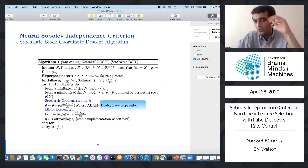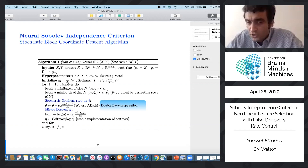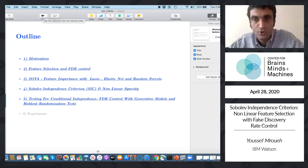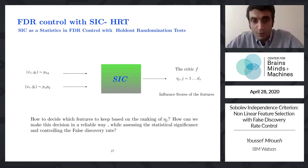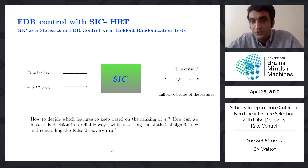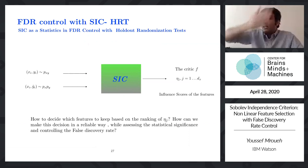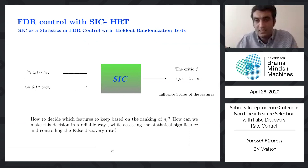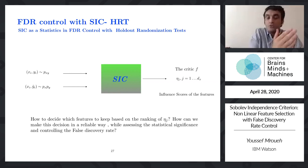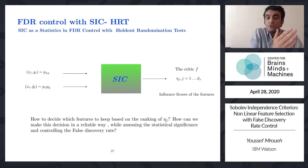Now I'll move to the second part: using those feature importance scores to control the false discovery rate. So far, we have a method that gives feature importance scores for nonlinear relationships. We could rank the eta_j's and keep the top 50 or 60 features, but setting this threshold is arbitrary. We need a principled way to determine when a feature is important versus not, which is where permutation tests come in — though as we'll see, simple permutation tests fail.